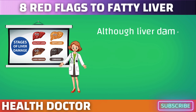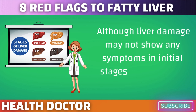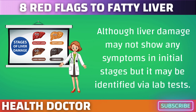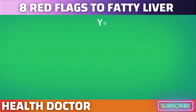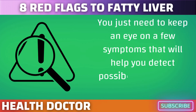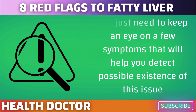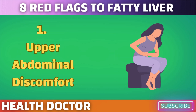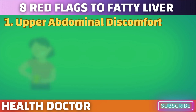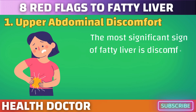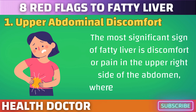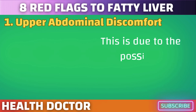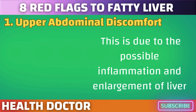Although liver damage may not show any symptoms in initial stages, it may be identified via lab tests. You just need to keep an eye on a few symptoms that will help you detect possible existence of this issue. The most significant sign of fatty liver is discomfort or pain in the upper right side of the abdomen, where the liver is located. This is due to possible inflammation and enlargement of the liver.